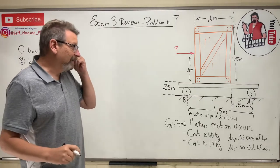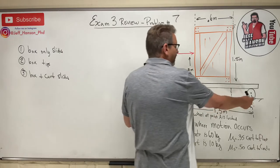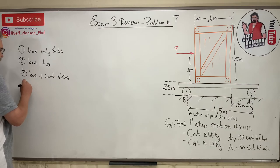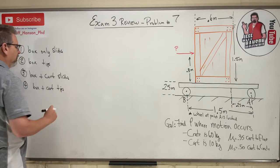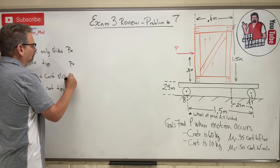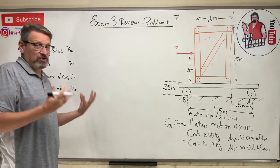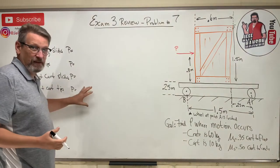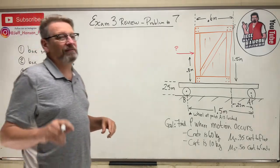Finally, scenario four: I could push on it and the box and cart could tip about that back tire — box plus cart tips. So we have to find a P value for every one of these scenarios. Then we pick the smallest P, because that's the one that will happen first — I'll never get to the bigger ones because the smaller one will occur first.